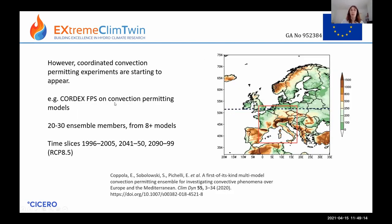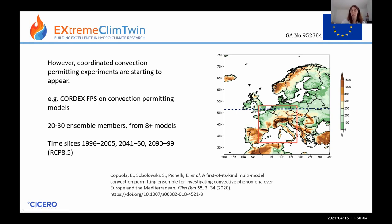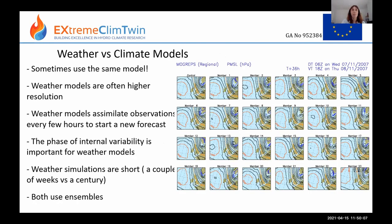Coordinated convection-permitting experiments are emerging. The CORDEX flagship project on convection-permitting models has approximately 27 modeling groups committed, with at least 8 different models, all simulating a large agreed-upon domain. Rather than continuous century-long projections, they simulate 10-year time slices for the present, mid-century, and future — representing the current state of the art for this type of modeling.